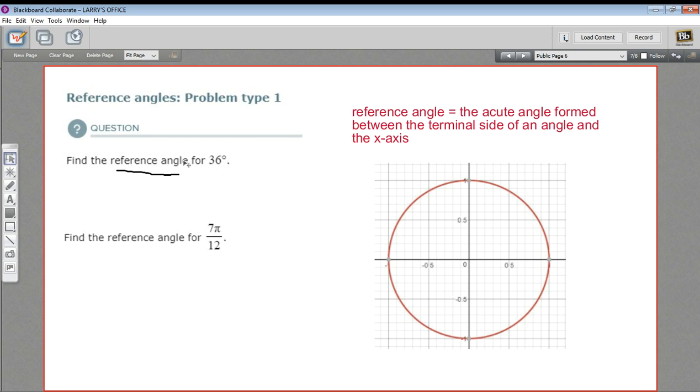So we'll start with this one. What is the reference angle for 36 degrees? Well 36 degrees is going to look something like this, and it forms the acute angle here with the x-axis. So that's just 36 degrees. So less than 90, the reference angle is just going to be the same. So that's 36 degrees.